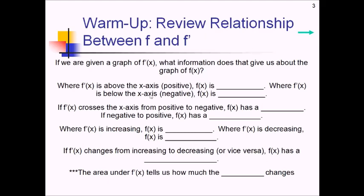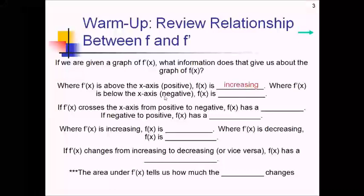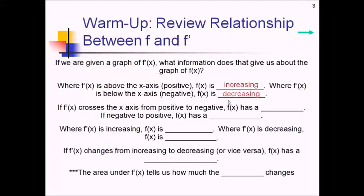Alright, let's see how this went. Where f prime of x is above the x-axis — positive in other words — the original function f is increasing. Where f prime is below the x-axis or negative, f is decreasing. If f prime crosses the x-axis from positive to negative, then the original function has a local maximum there. And if we're going from negative to positive, then the original has a local min.